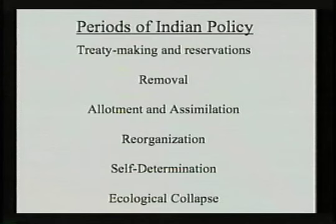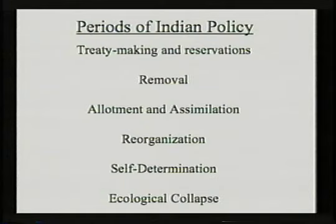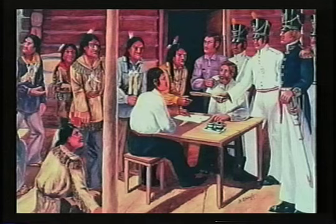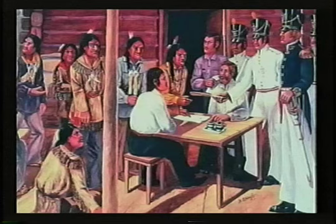With that framework, let's look at the periods of federal Indian policy. These periods are very important because they make up the background context to federal Indian law today. These eras do overlap, but we will go through treaty-making and reservations, removal, allotment and assimilation, reorganization, self-determination, and finally the one we are in now: ecological collapse. The treaty-making era lasted until 1871 when Congress finished the use of treaties. After that, there were no more treaties made.